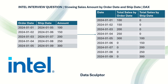Hello everyone. Today we will be solving a question using DAX. We have a table called Sales with three columns: Order Date, Ship Date, and Amount. The Order Date represents when a customer raised an order, and Ship Date represents when the order was shipped.